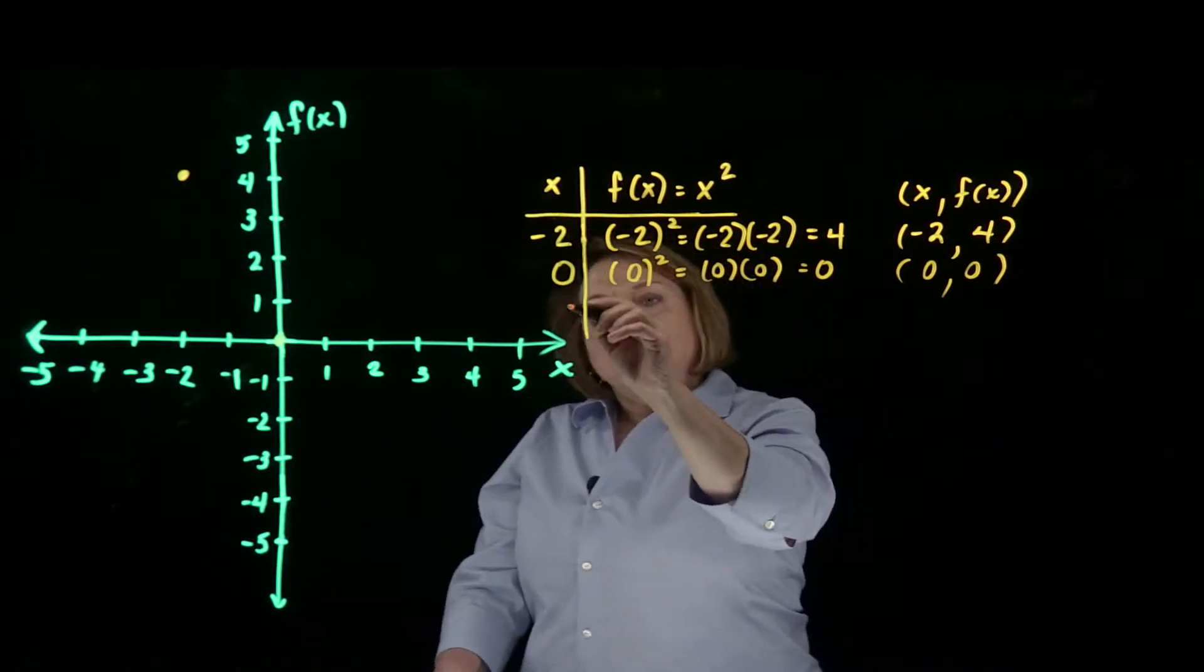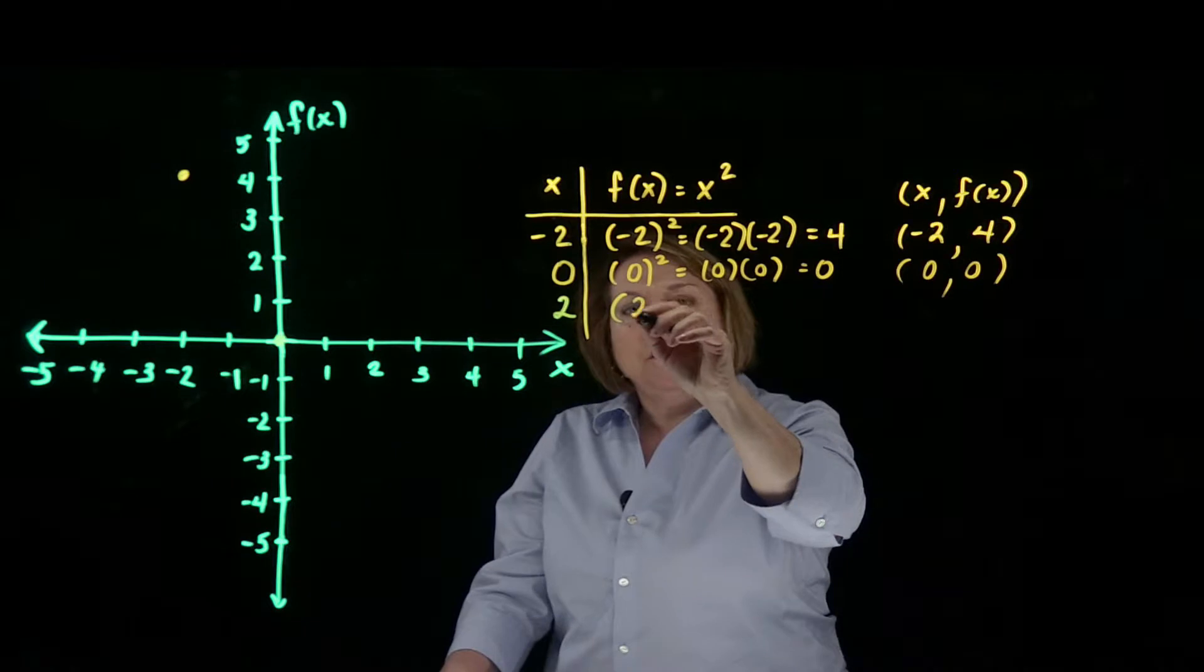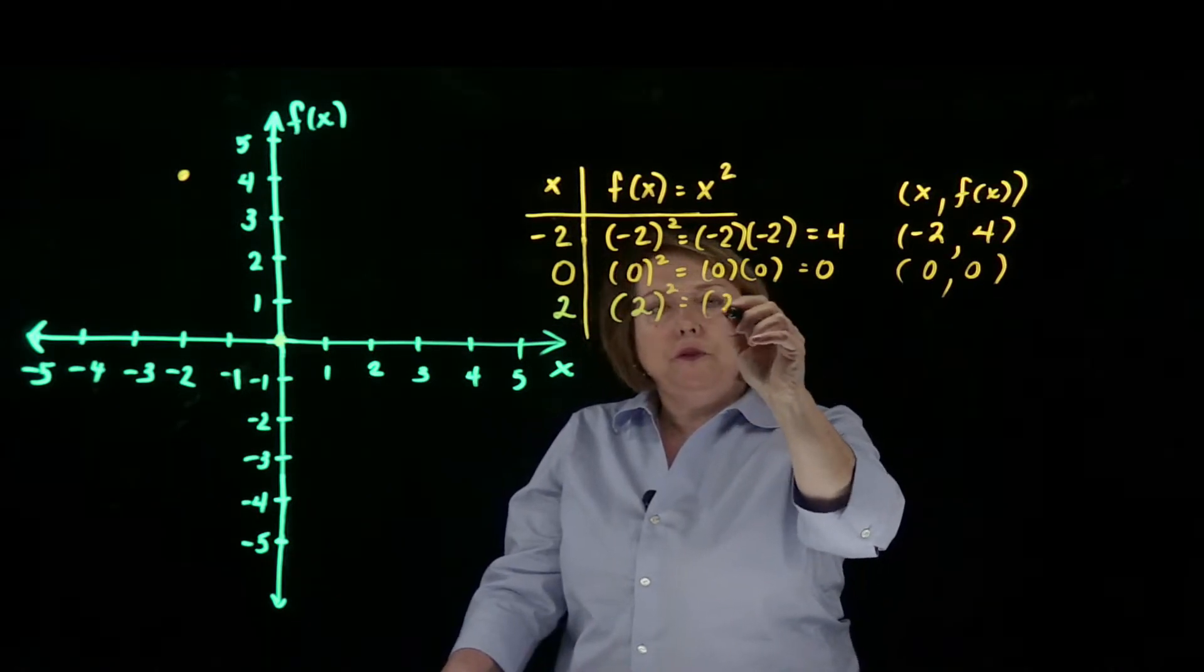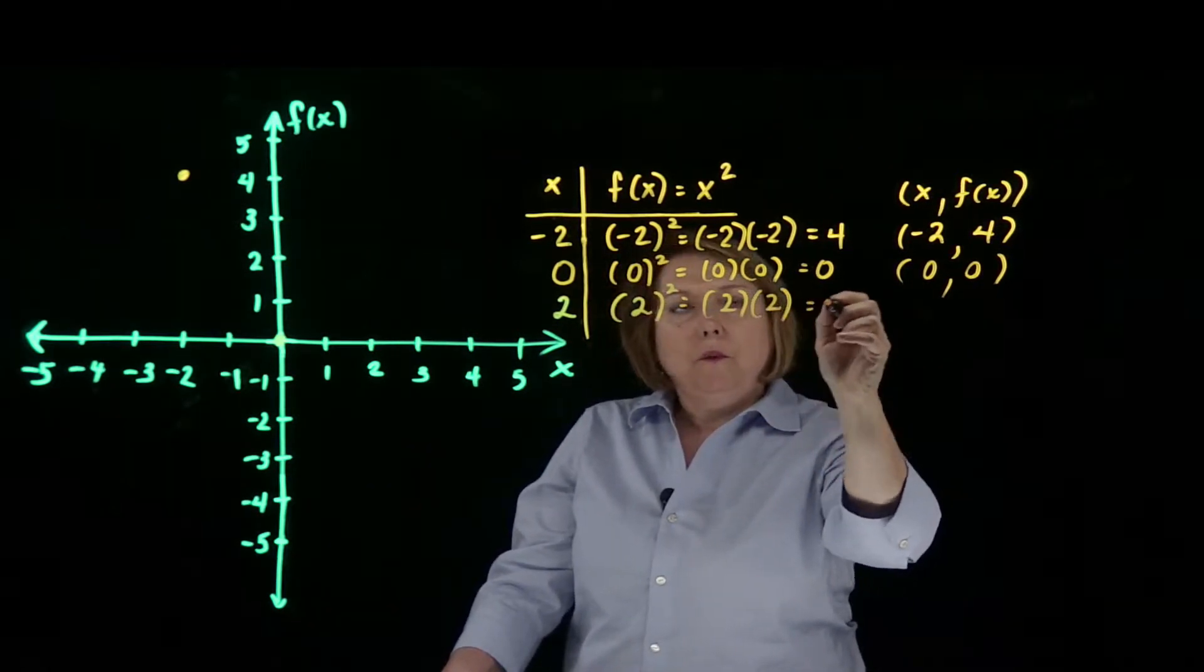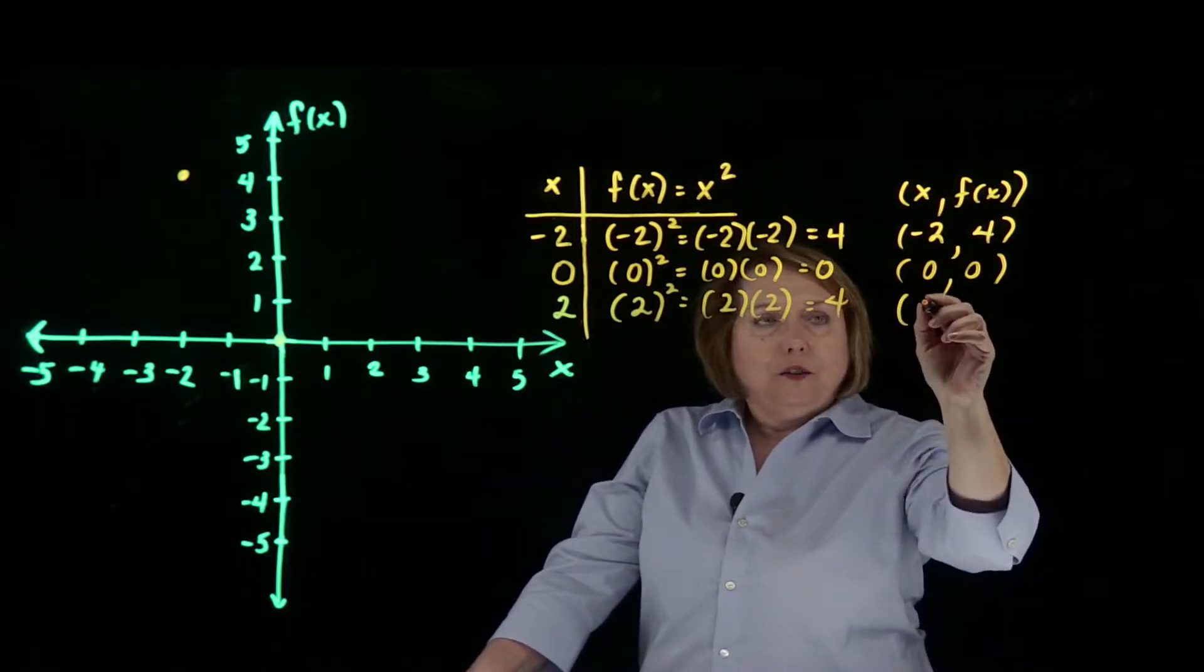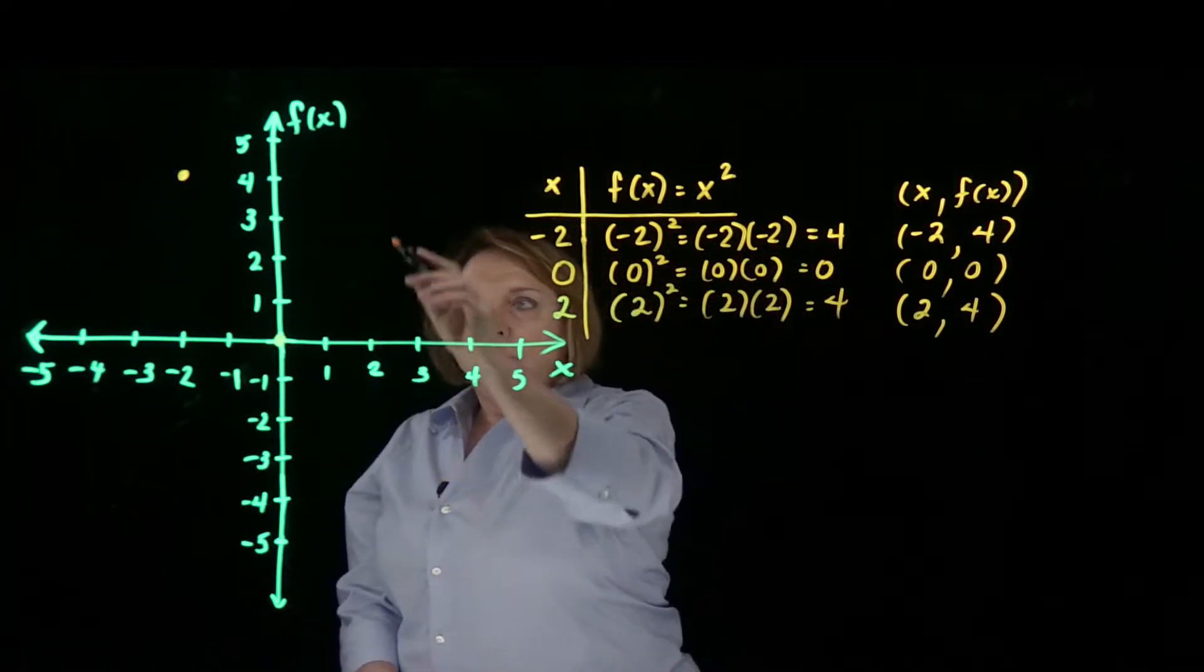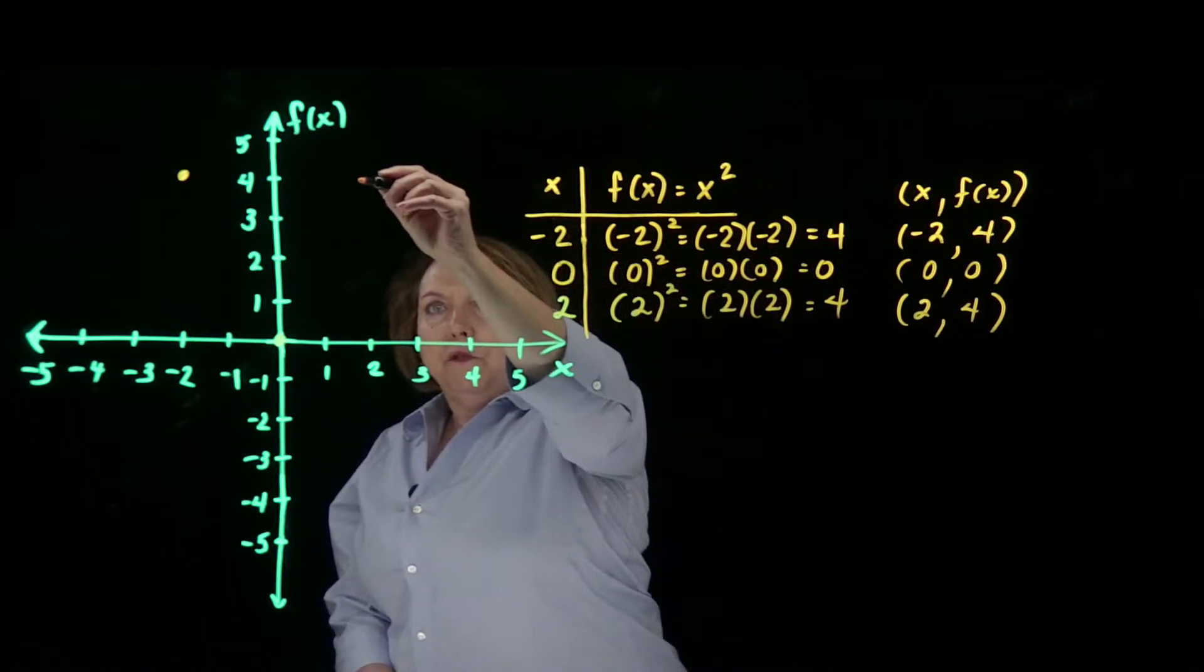And then positive 2 would be another value. So positive 2 squared is going to be 2 times 2, which is equal to, once again, positive 4. So positive 2, positive 4, x is positive 2, f of x is positive 4.